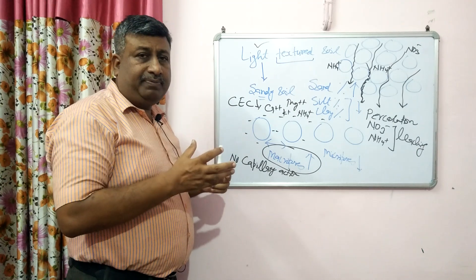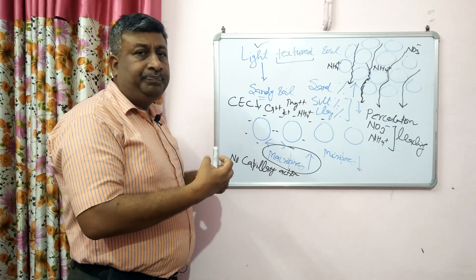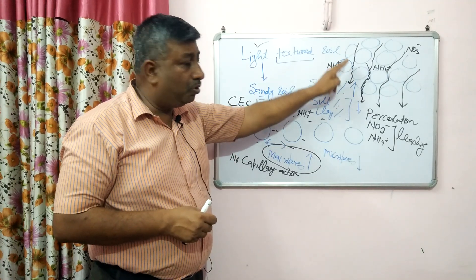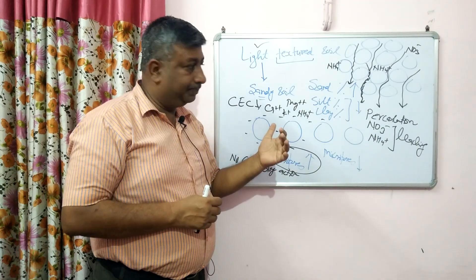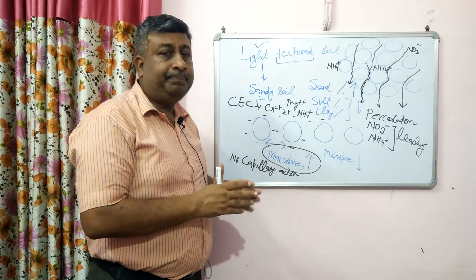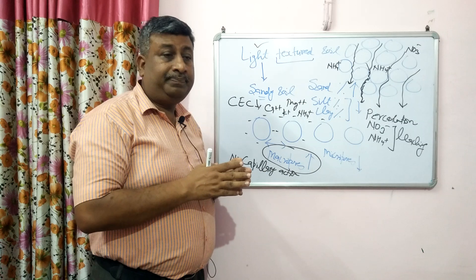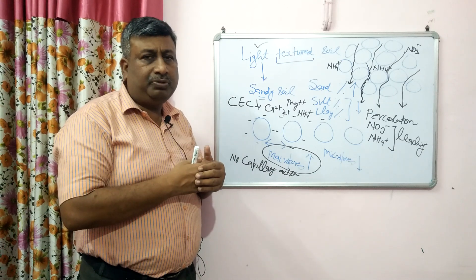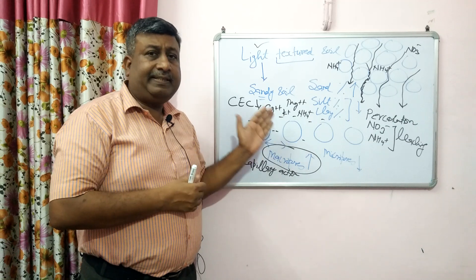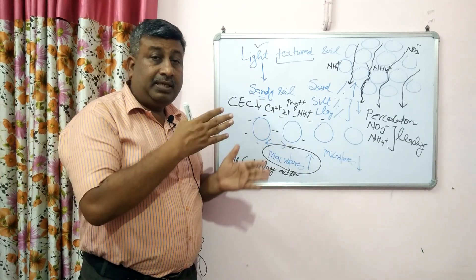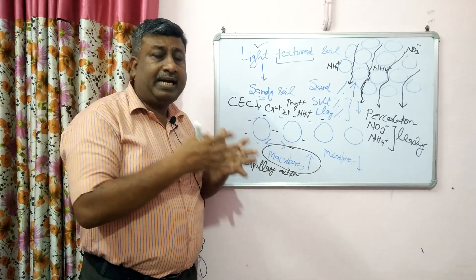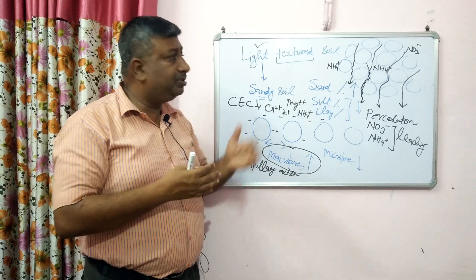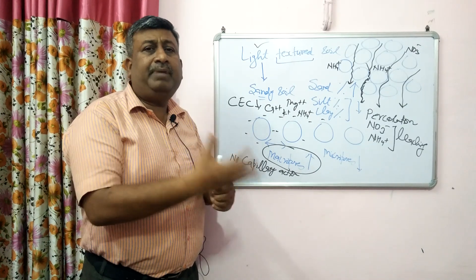Because of low CEC, sand particles cannot attract and hold ammonium ions, which are cations. So ammonium enters the soil solution and with the macropores present, it percolates. The low CEC also means calcium, magnesium, and potassium are also leached down. So light textured soil shows deficiency not only of nitrogen but also of potassium, calcium, and magnesium. However, the problem with nitrogen is more severe because nitrate also leaches with percolating water.